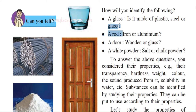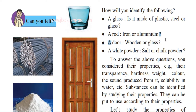The rods — are they made of iron or aluminium? Think about it, just look at it. What could it be — iron or aluminium? The door — is it wooden or glass?